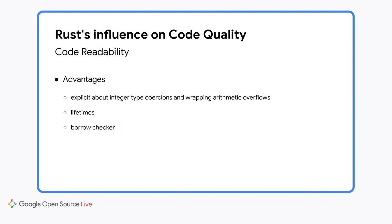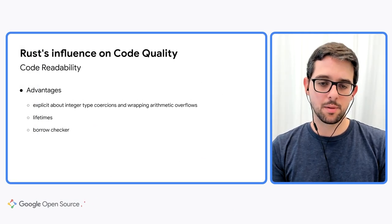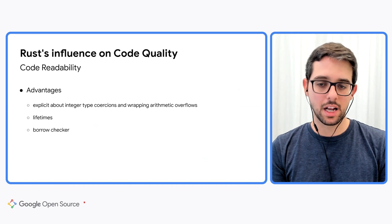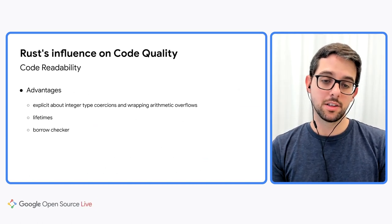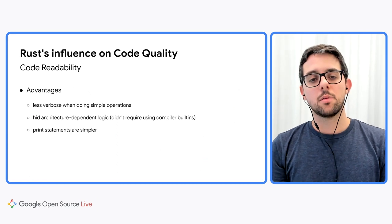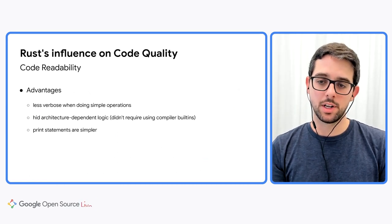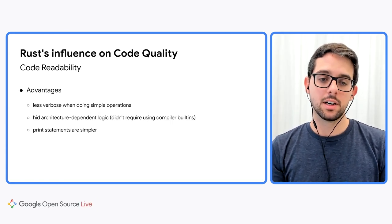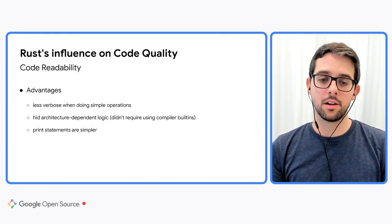When we talk about quality in terms of code readability and confidence that it does what you would expect, I believe the quality of the Rust port is very similar to the original C++ implementation. But Rust is slightly better because it is explicit about integer type conversions and wrapping arithmetic overflows. It has lifetimes, which document invariants and help reason about how data structures are connected. The code passes the borrow checker, which guarantees that use-after-free or accessing uninitialized pointers did not happen outside of unsafe blocks. Rust code is also less verbose when doing simple operations like reading a file content into a buffer, reading from a buffer to an integer of a specific size, or dealing with endianness. Rust also hides architecture-dependent logic away from the programmer — for example, writing print statements is much simpler since they don't change based on the type being printed.